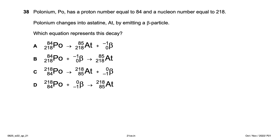Polonium (Po) has a proton number of 84 and a nucleon number of 218. It changes by emitting a beta particle. In beta decay, the proton number increases by 1 (to 85) and the nucleon number stays the same (218). Writing out the equation gives option C as the right answer.